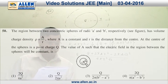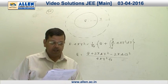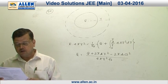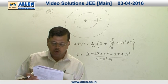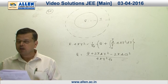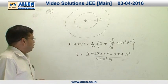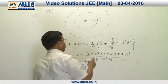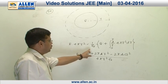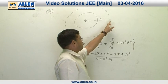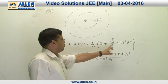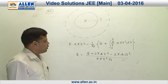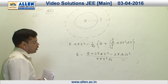Question number 50. The region between two concentric spheres of radii a and b has a volume charge density rho = A/R, where A is a constant. At the center is placed a point charge Q, and we need to find the value of A such that the electric field in the region between the spheres is constant (independent of R). Applying Gauss's law: E × 4πR² = Q_enclosed / ε₀, where charge enclosed equals Q plus the integral of rho × 4πR² dR.